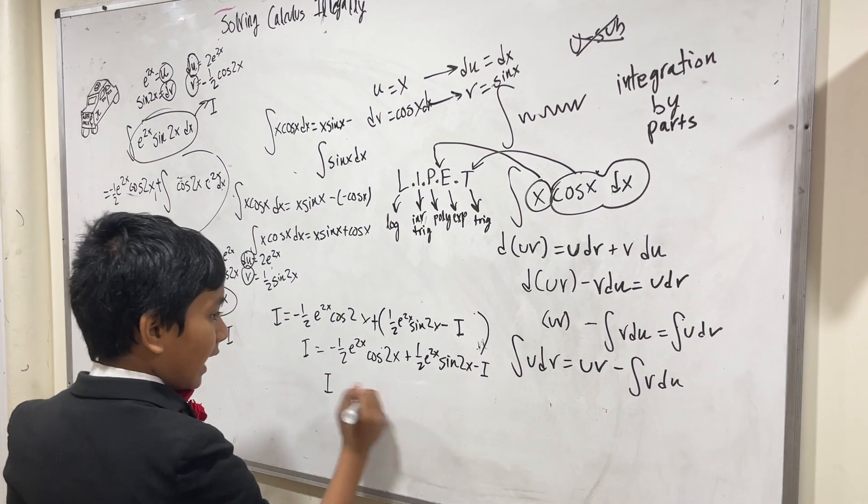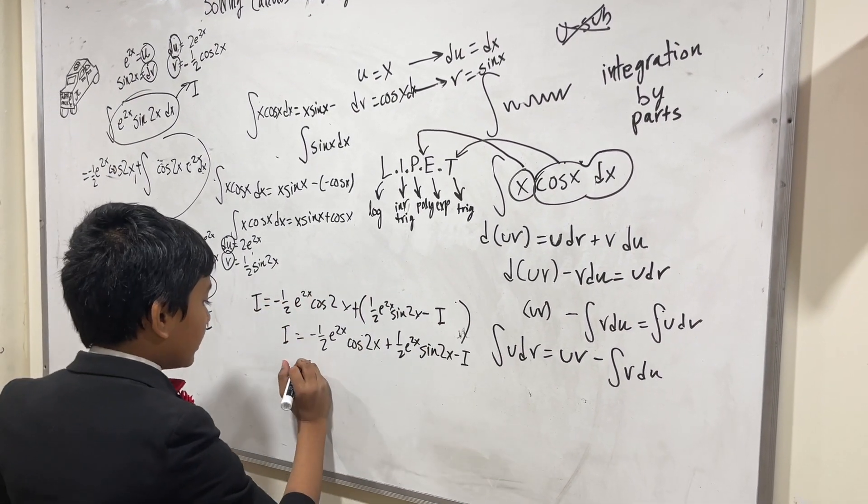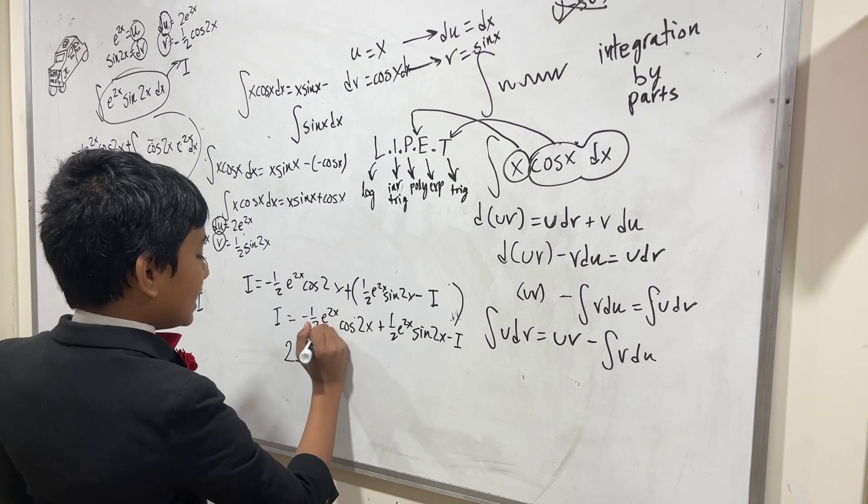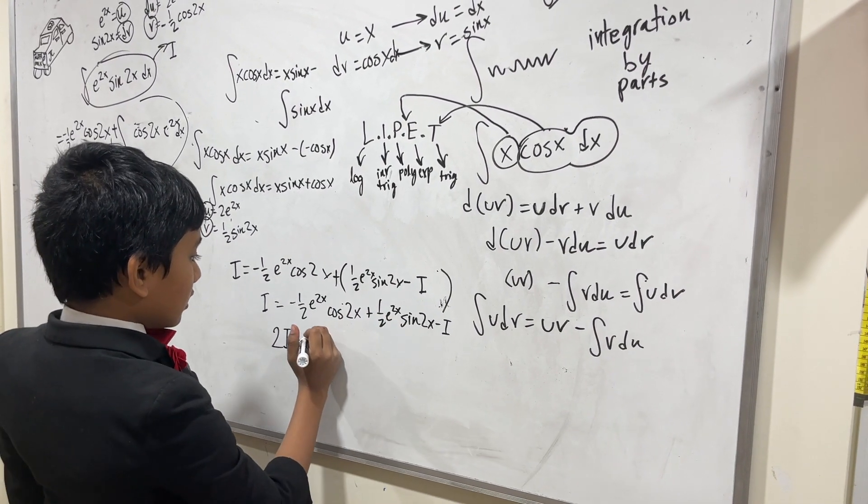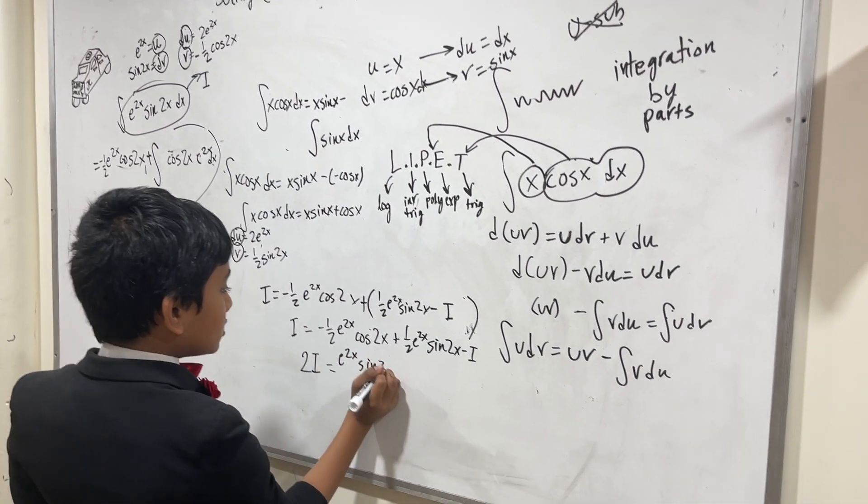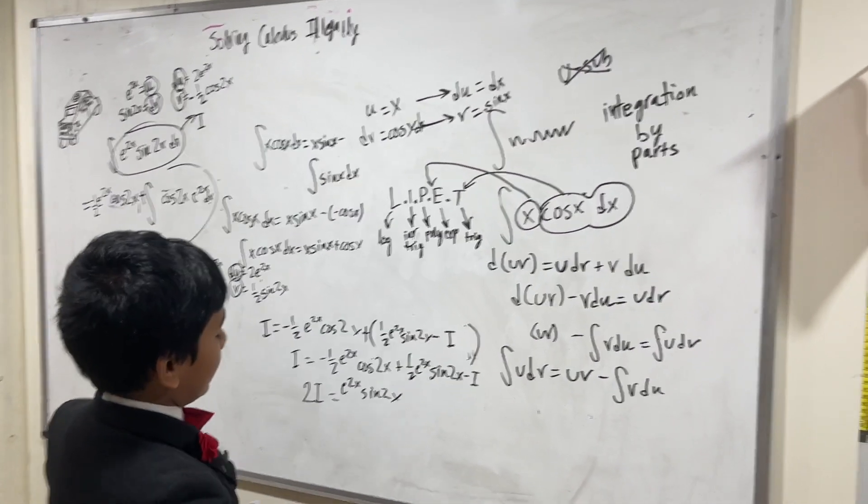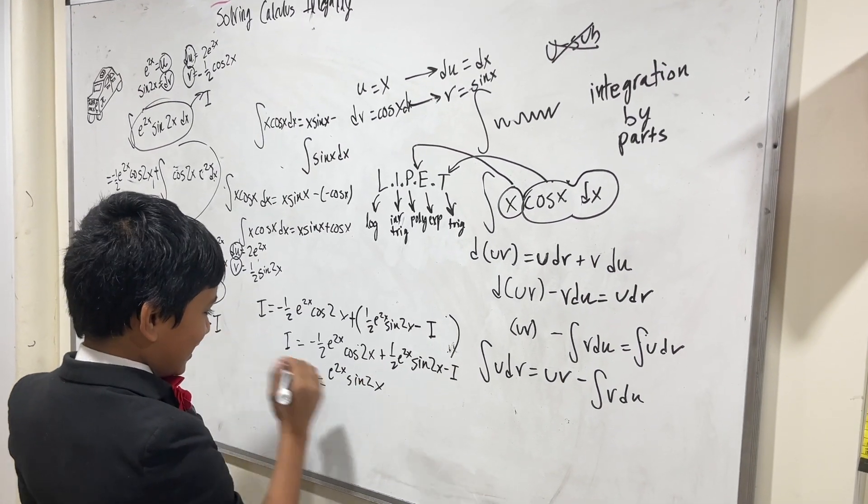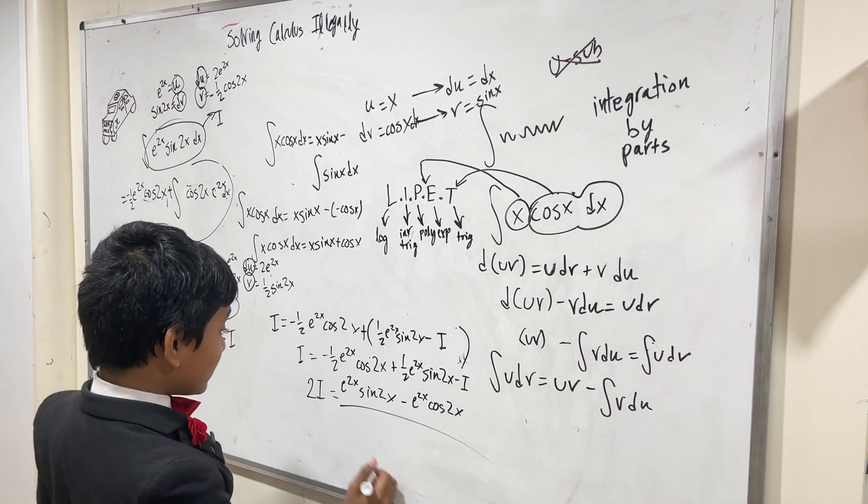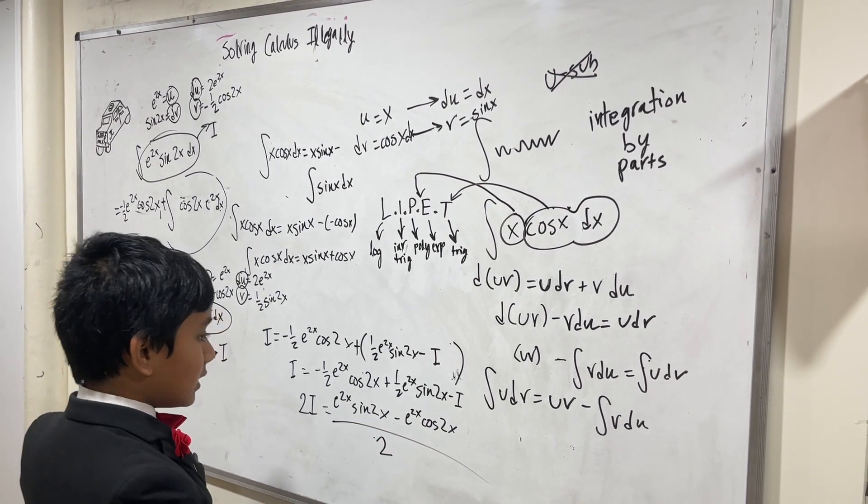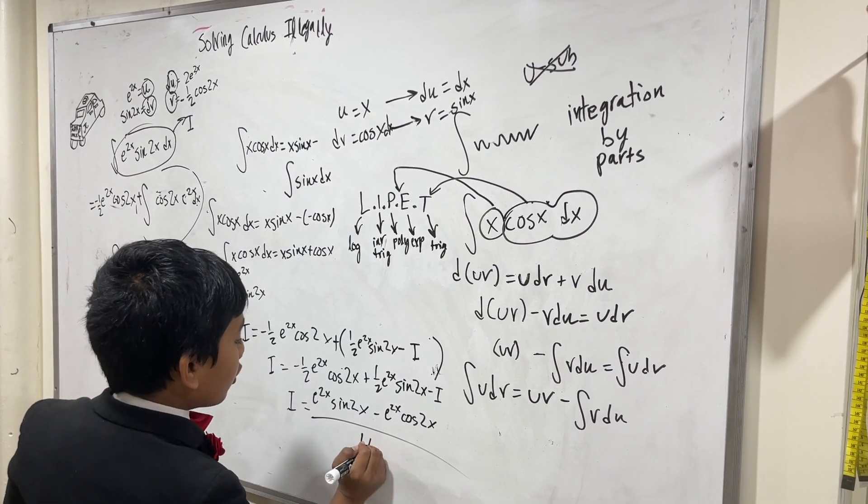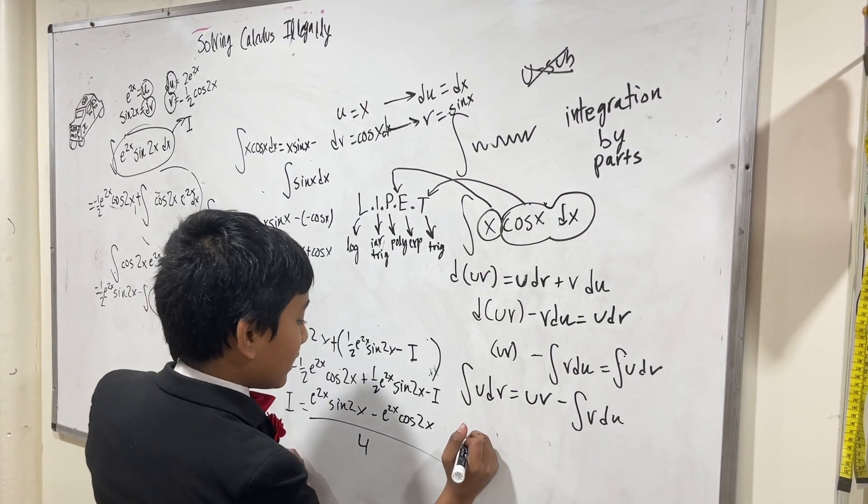Now let's gather that all together. i, we're taking this to the other side. i plus i is 2i, is equal to, well these both have a denominator of 2, so let me just write that down. e^(2x) sine 2x minus e^(2x) cosine 2x over 2. And now that means that i is simply the same thing over 4. If you wanted to simplify that even further, that's e^(2x) times (sine 2x minus cosine 2x) over 4.